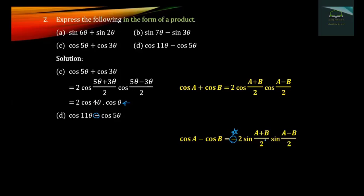Now we have to calculate this. Bound: minus 2. Now pound 11, plus 5, 2. Sign: now minus 5, 11, minus 5, 2. And 16, 2.